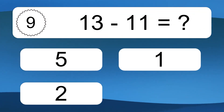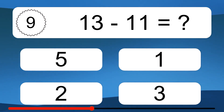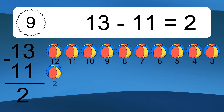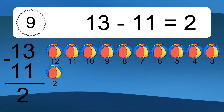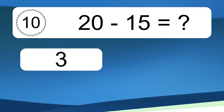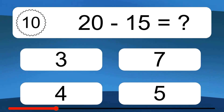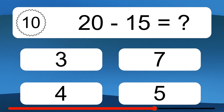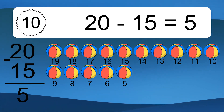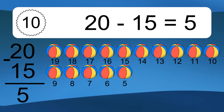13 minus 11 equals what? 13 minus 11 equals 2. Let's count it. 12, 11, 10, 9, 8, 7, 6, 5, 4, 3, 2. 20 minus 15 equals what? 20 minus 15 equals 5. Let's count it. 19, 18, 17, 16, 15, 14, 13, 12, 11, 10, 9, 8.